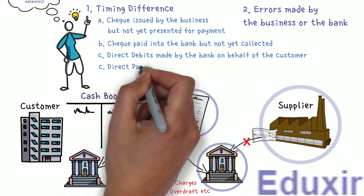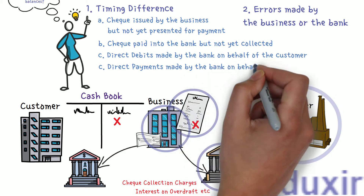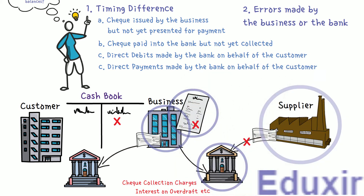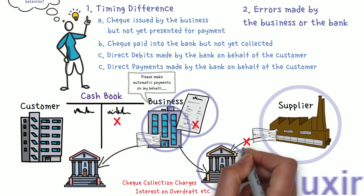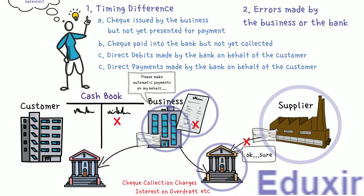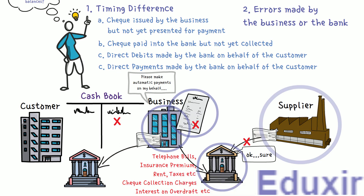The next reason is direct payments made by the bank on behalf of the customer. Sometimes customers give standing instructions to the bank to make payments regularly on specific days to third parties — for example, telephone bills, insurance premium, rent, taxes, etc. These payments are directly paid by the bank and debited in the passbook, causing a difference between the cashbook and passbook balances.